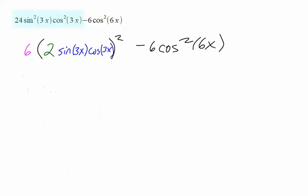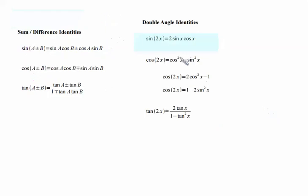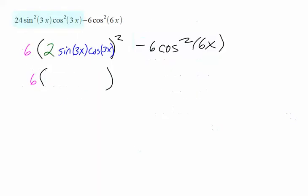Now, if we adapt our identity, this is going to be 6 times we replace what's inside parentheses with just the sine of double the angle. So, this is going to turn out to be the sine of 6x, that quantity is squared, minus 6 cosine squared of 6x.